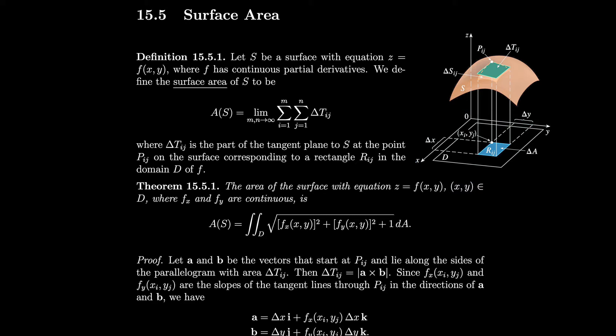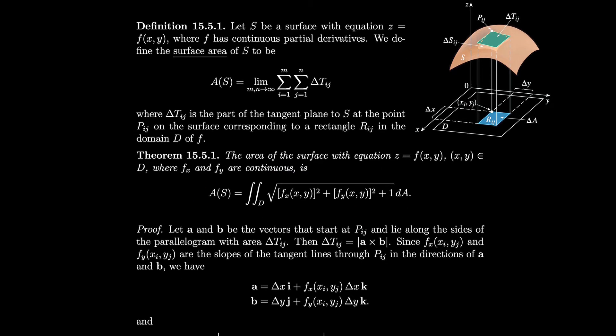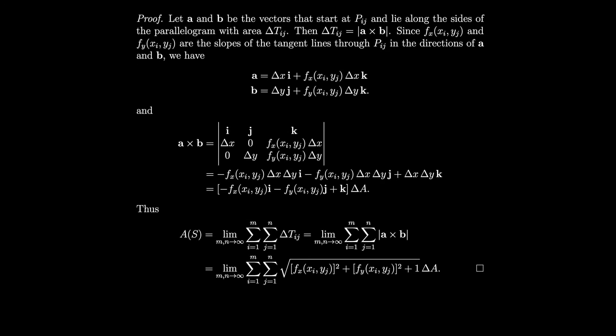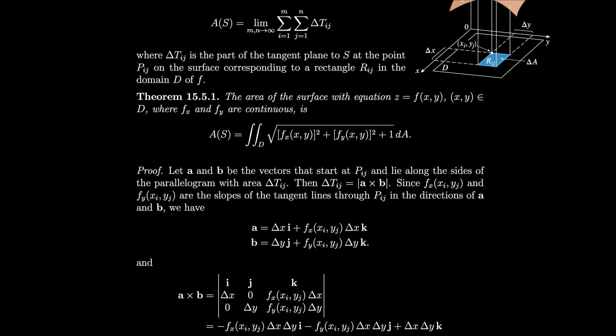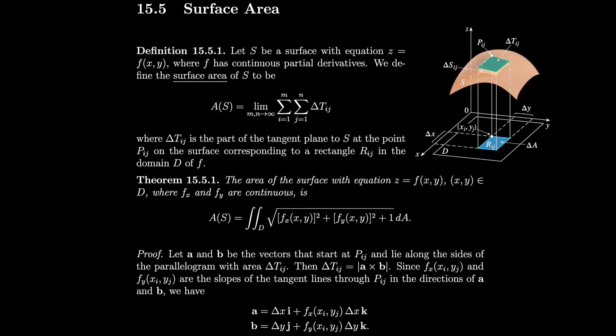So in order to try to figure out a better way to compute surface area, because obviously we don't want to do the limit of the double Riemann sum of something in the tangent plane, we come up with this formula over here. And let's prove this real quick. So we let a and b be the vectors that start at pij. So they lie along the sides of this parallelogram, delta tij, so let's say over here is a, and then over here can be b. So this is one vector, this is another vector. And then, the area of the parallelogram, delta tij, is the magnitude of the cross product of those vectors, as we've seen, taking the cross product, taking the length of the cross product, that's the area of the parallelogram formed by those two vectors.